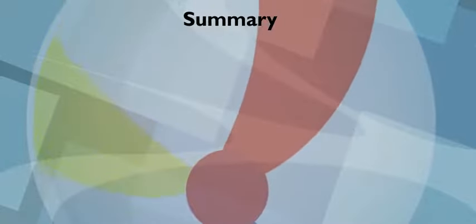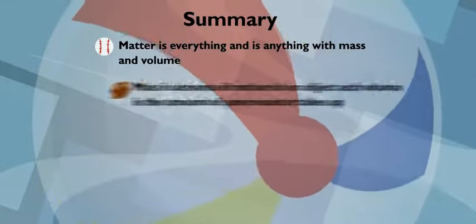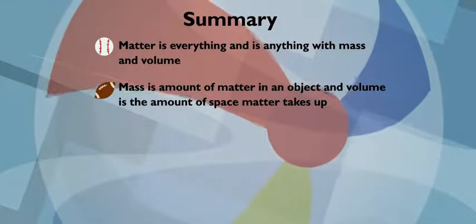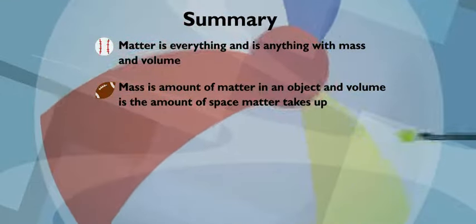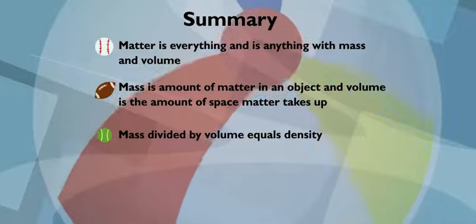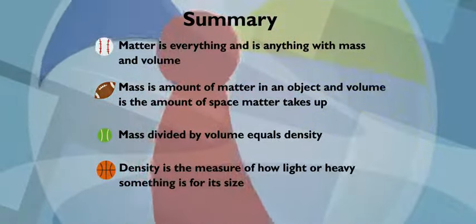Okay. The properties of matter. Matter's everywhere, and all of it has mass and volume. Mass is the measure of matter in an object, and volume's how big something is, the amount of space it takes up. Take mass and divide it by volume, and you've got density, the measure of how light or heavy something is for its size.